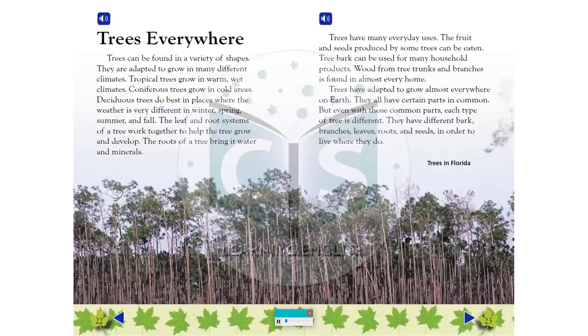Trees have many everyday uses. The fruit and seeds produced by some trees can be eaten. Tree bark can be used for many household products. Wood from tree trunks and branches is found in almost every home. Trees have adapted to grow almost everywhere on earth.